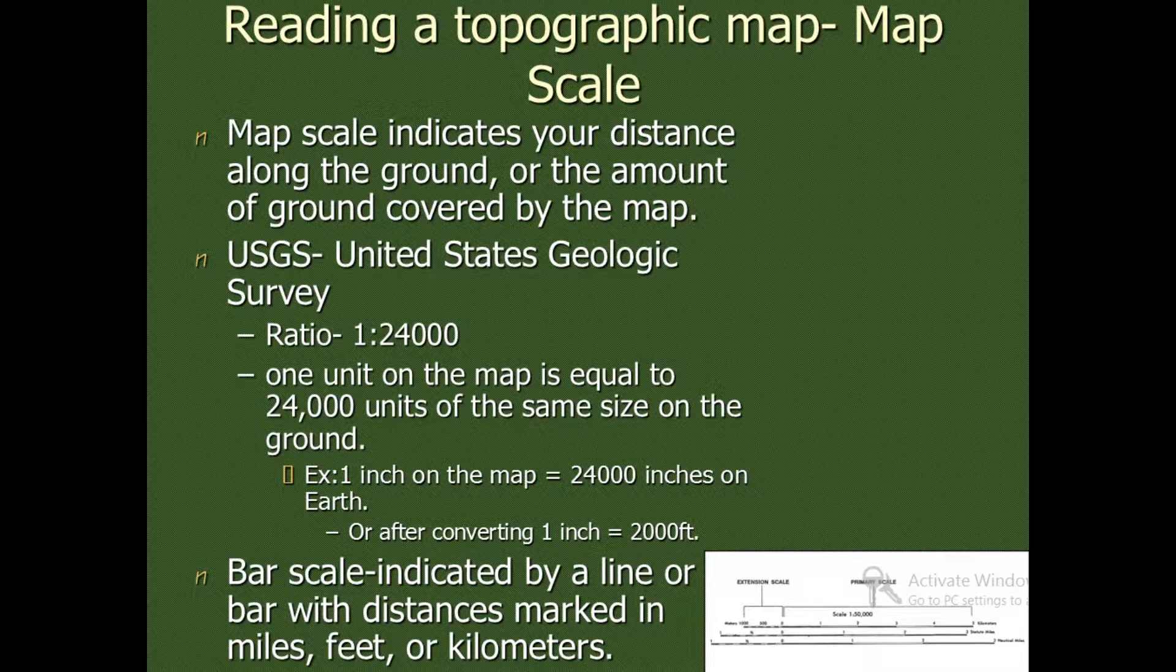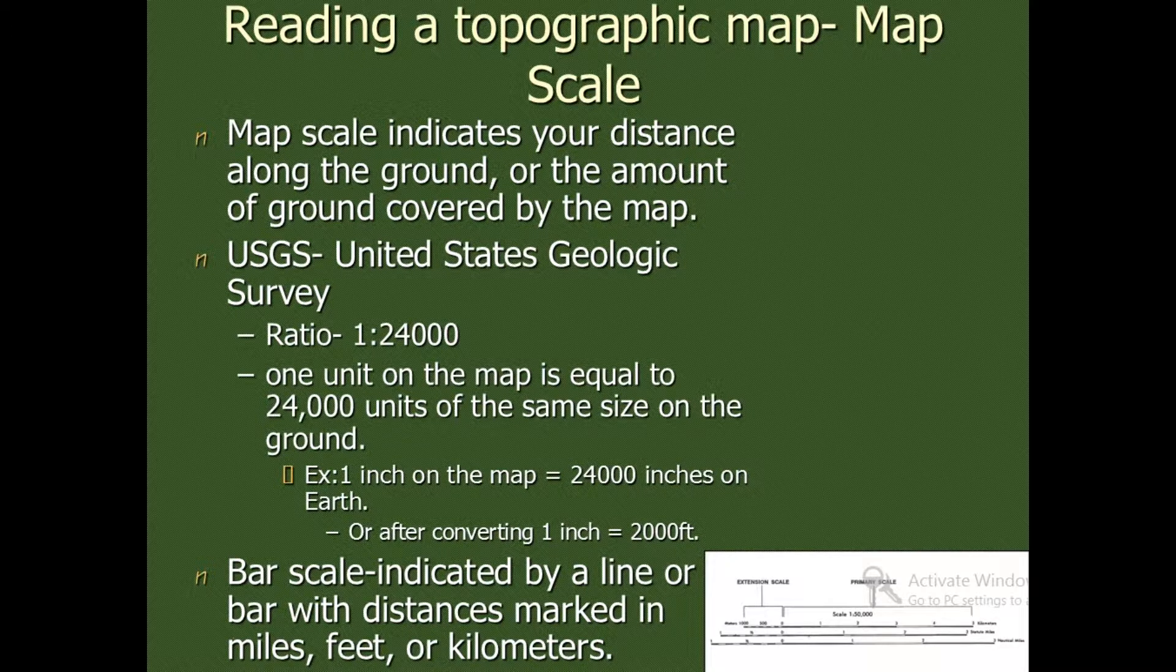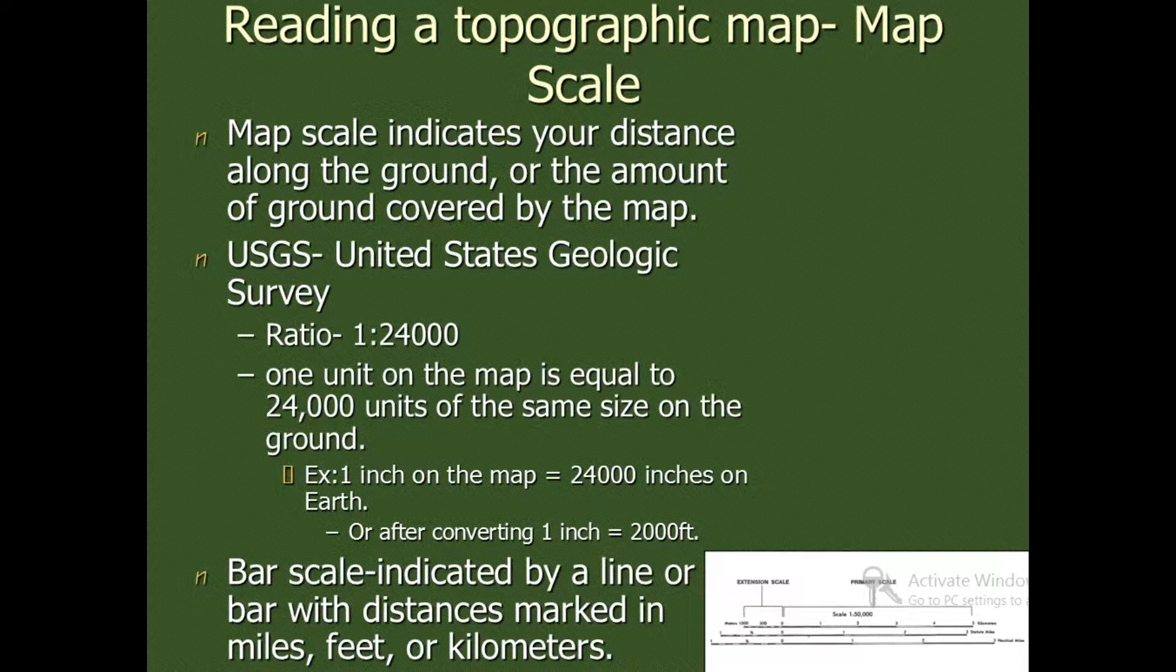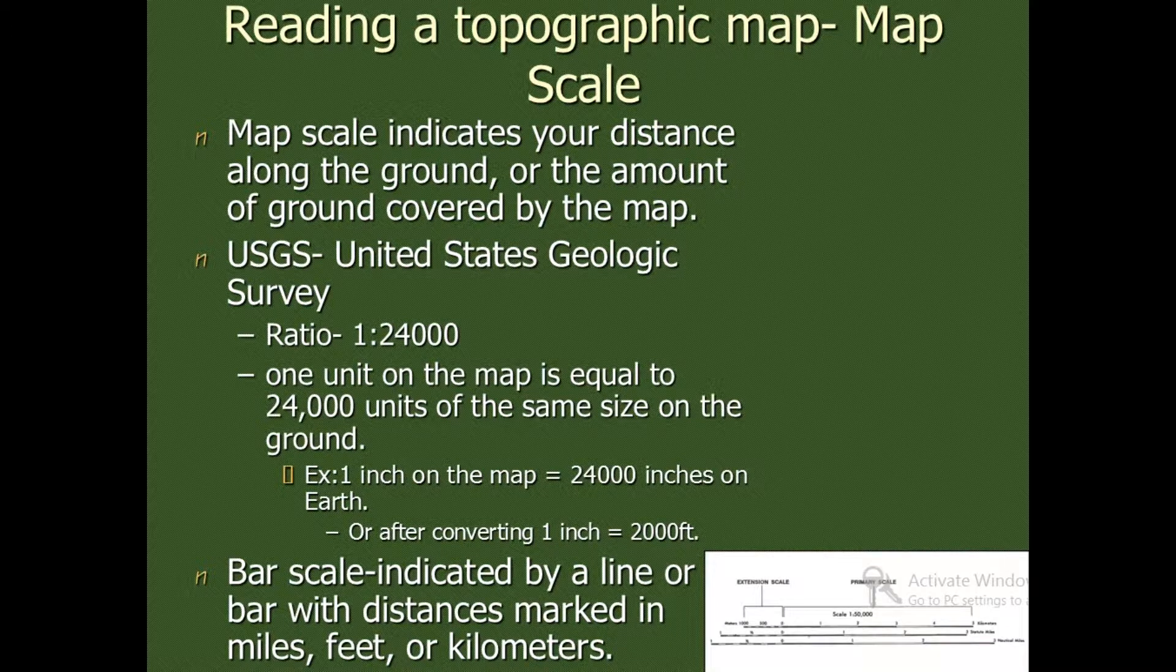Scale of the map: map scale indicates the distance along the ground or the amount of the ground covered by the map. USGS, United States Geological Survey, takes the ratio of 1 to 24,000. One unit on the map is equal to 24,000 units of the same size on the ground. For example, one inch on the map will be equal to 24,000 inches on the Earth.